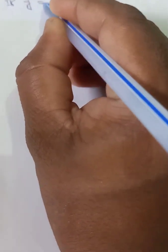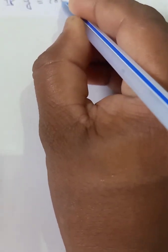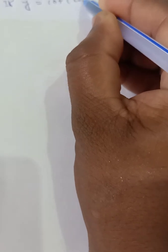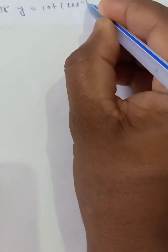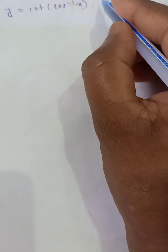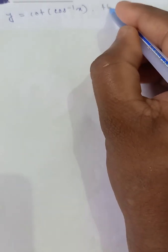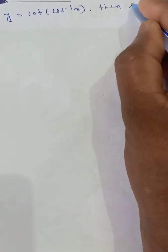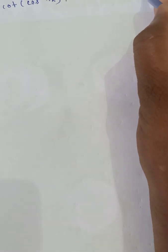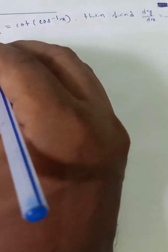y is equal to cot of cos inverse x. Then find dy by dx.